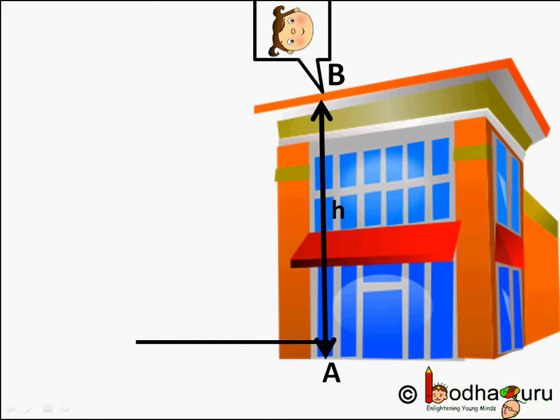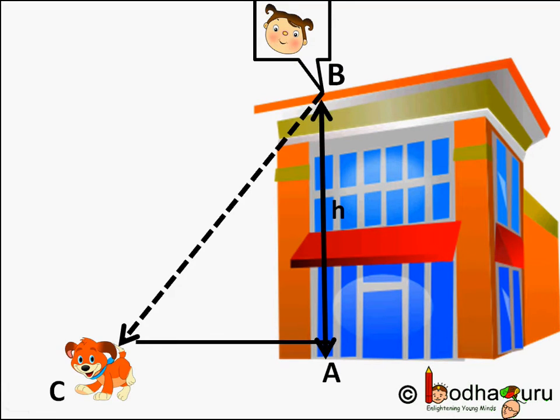Now let us say we are on the roof of a building instead of being on the ground, and we are looking down at a puppy on the road. In this case, our line of sight looking down at the puppy is BC.